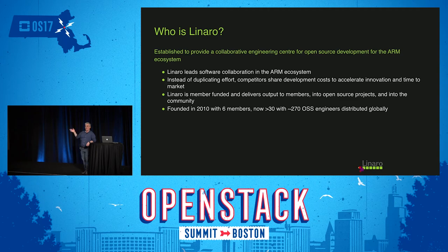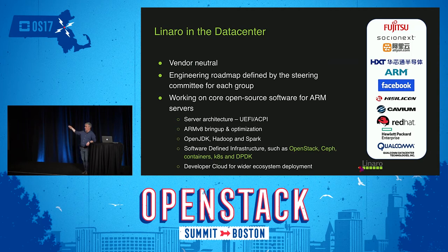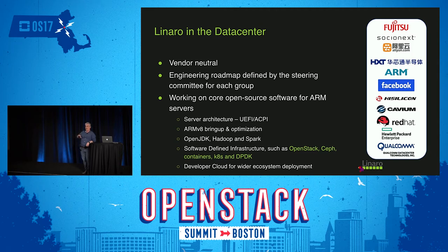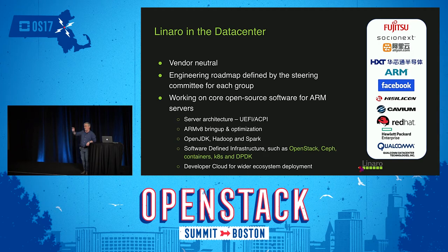Linaro in the data center is vendor neutral. The engineering roadmap is defined by the steering committee members. We work on core open source software: OpenStack, Ceph, containers, Kubernetes, DPDK. But we also have to do things from UEFI for ARM server — needed in OpenStack for guest images — all the way through the firmware layer, the kernel, KVM, QEMU, and then up into OpenStack and big data. Members include Fujitsu, Socionext, Alibaba (AliYun), HXT, ARM, Facebook, HiSilicon, Cavium, Red Hat, HPE, and Qualcomm — a good mix of chip makers, manufacturers, and end users.